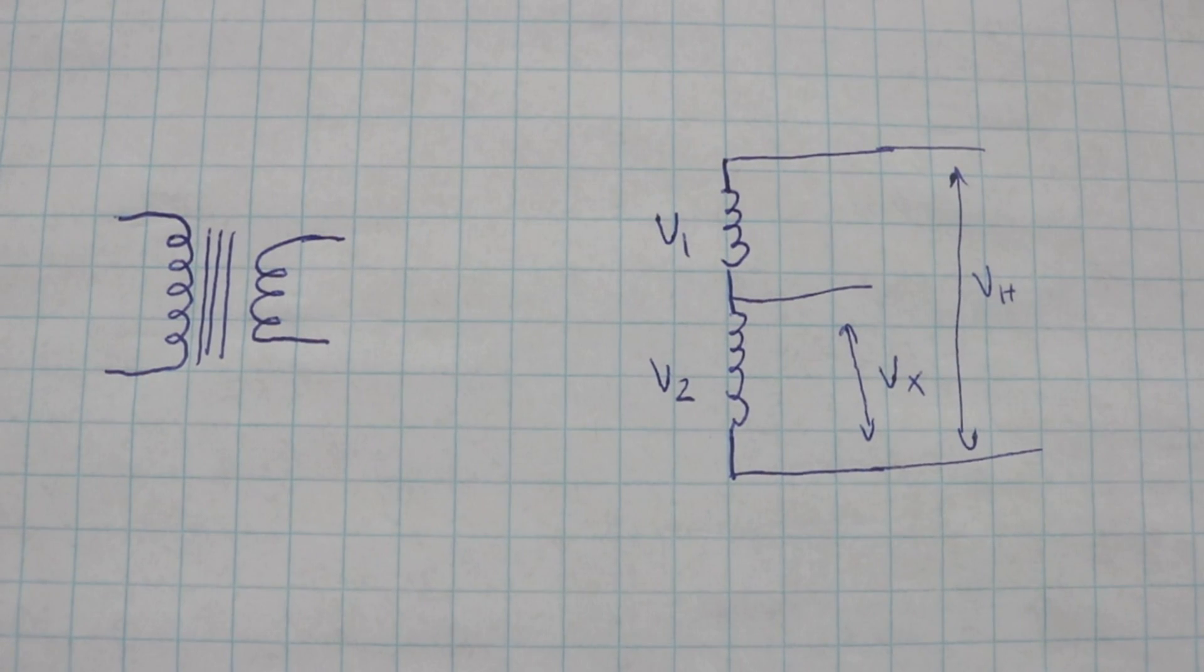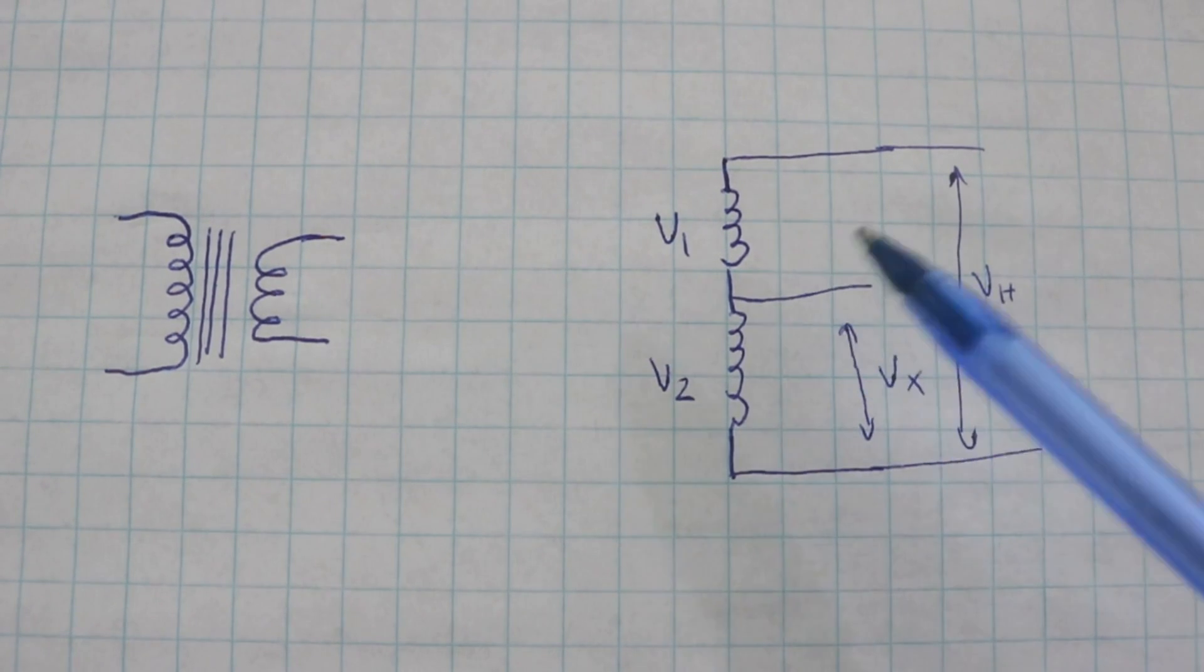So at the output, you can obtain the sum of the two voltages or the difference depending on how you wire the two coils. We will see this in a moment.